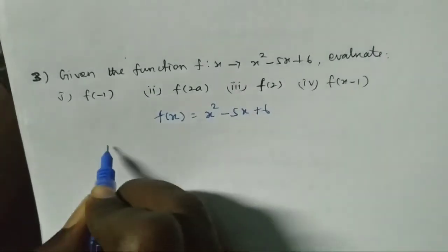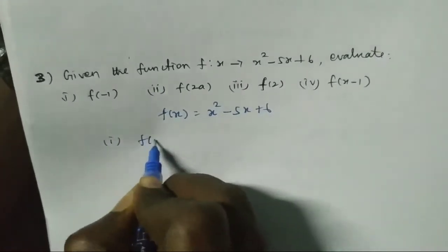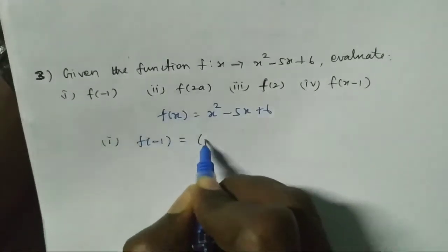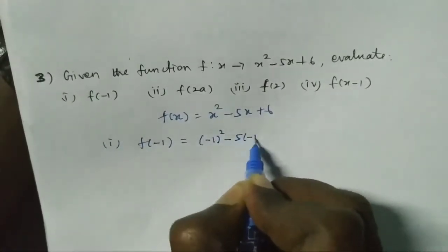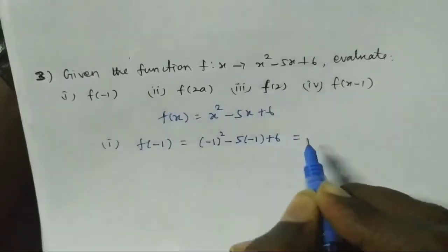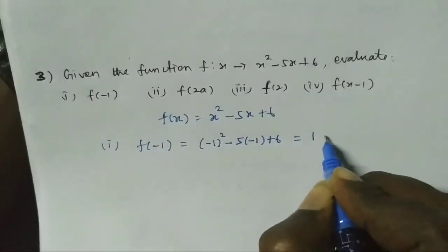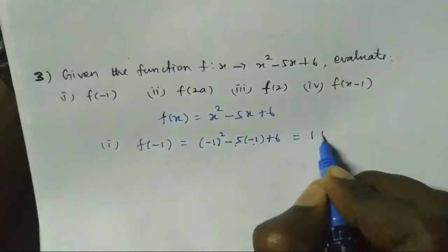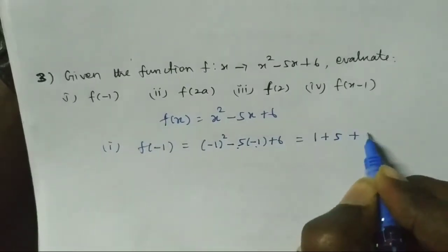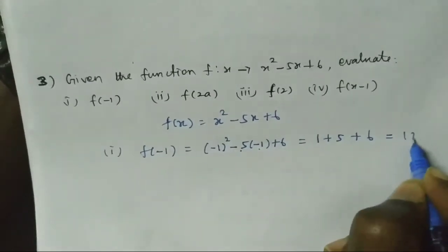First question is f(-1). So x equals minus 1. f(-1) = (-1)² - 5(-1) + 6. Minus 1 square is plus 1, minus 5 into minus 1 is plus 5, plus 6. The answer is 12.